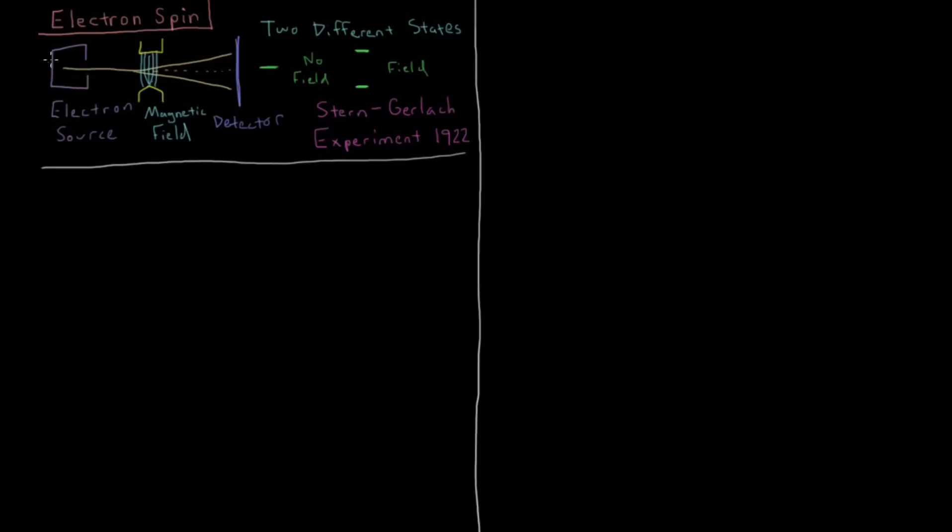So in 1922, two physicists named Stern and Gerlach did the following experiment. They had some source which would heat up silver atoms, which have a single unpaired electron in their valence shell, and then they would be ejected towards a target. If there was no magnetic field, they would just get one band of these silver atoms. But if there was an inhomogeneous magnetic field, as they applied the field strength larger and larger, they got a splitting of the atoms into two distinct bands.